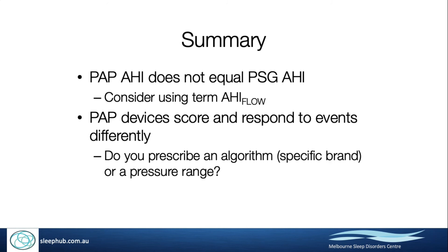I hope I've been able to show you that we do need to question the parameters coming out of PAP devices. Don't use the term AHI from the devices — I challenge you to consider using the term AHI-flow instead. Also, look at the devices: they score and respond to events differently. When prescribing a device, should you be prescribing just a pressure, or should you also be recommending a particular algorithm for patients? Thank you very much, and I should appear on Zoom shortly to answer some of your questions.